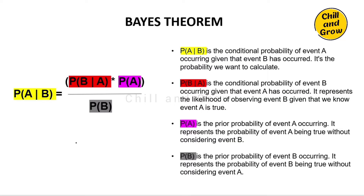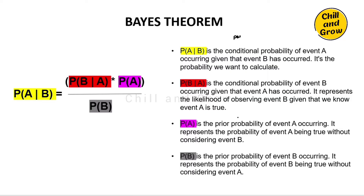P of A given B is the Posterior Probability — the probability of event A given evidence B. P of B given A is the Likelihood Probability — given that event A is true, what is the probability of observing evidence B.